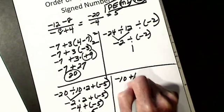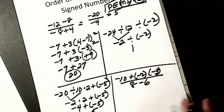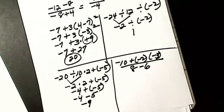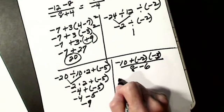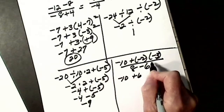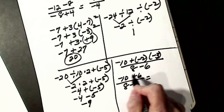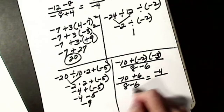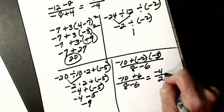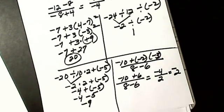Negative 10 plus negative 2 times negative 3, over 8 minus 6. I do numerator separate from denominator. In the numerator, I do multiplication before addition-subtraction: negative 2 times negative 3 is positive 6. Signs are different — subtract, take the sign of the larger. In the denominator, signs are different — subtract, take the sign of the larger. Division: unlike signs gives a negative.